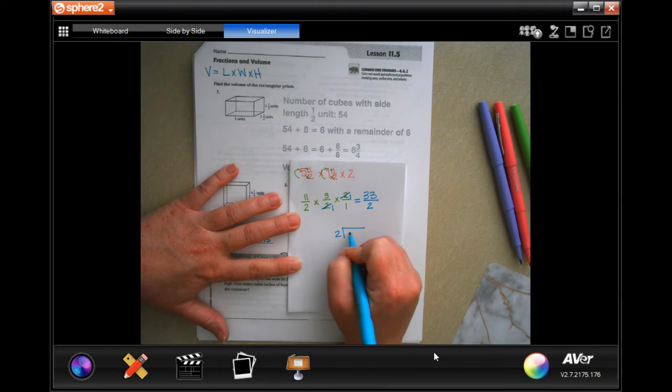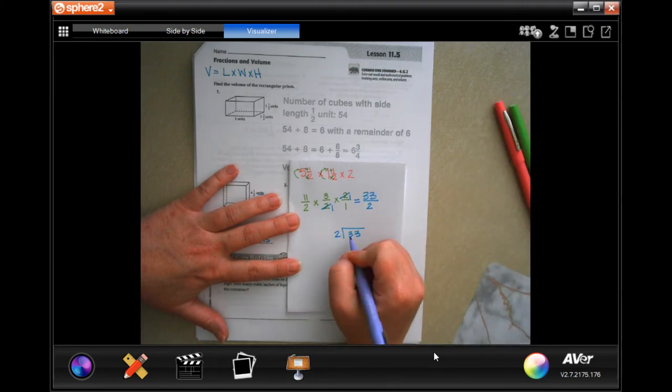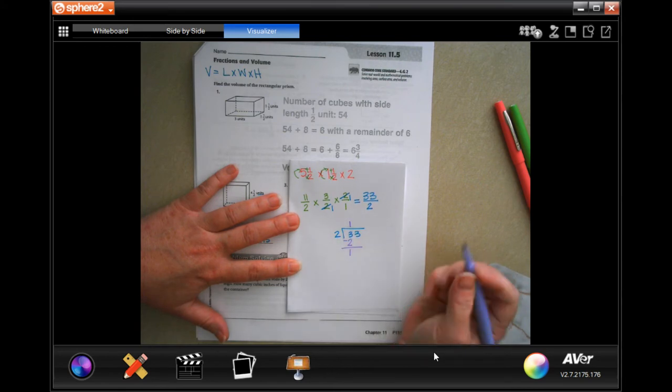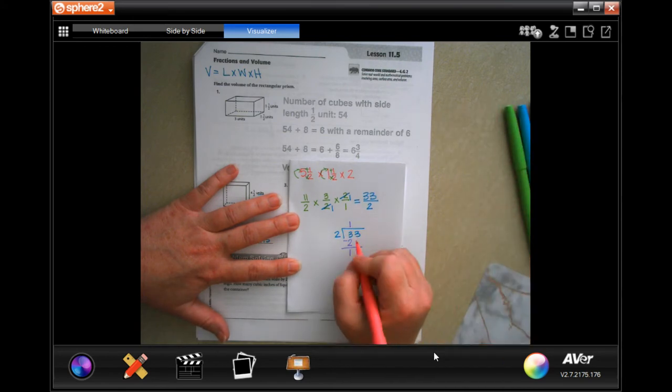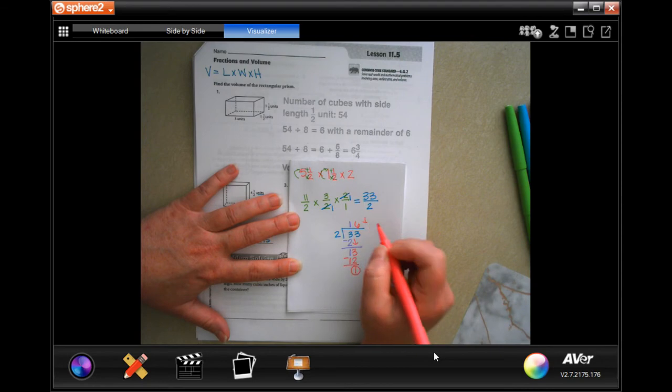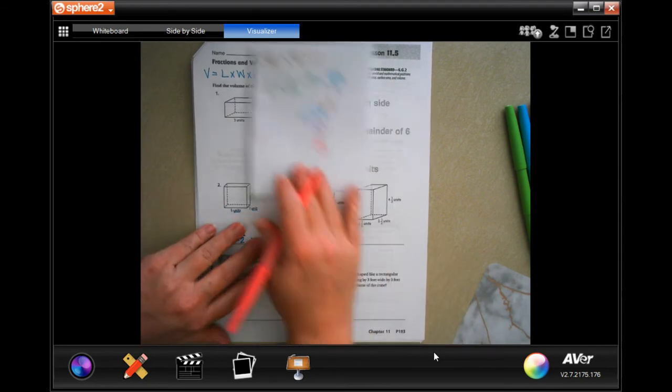So, now, 2 into 33. 2 goes into 3 1 times. 1 times 2 is 2. Subtract and get 1. 1 is smaller than 2, so I'm going to bring down my 3. 2 goes into 13, 6 times. 6 times 2 is 12. Subtract and get 1. Now, that 1 is my new numerator, and I keep my denominator. So, 16 and a half.